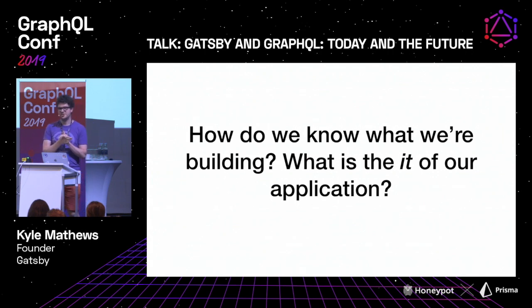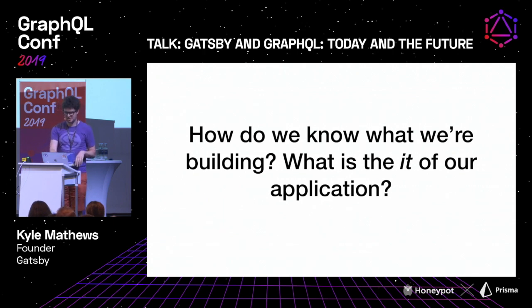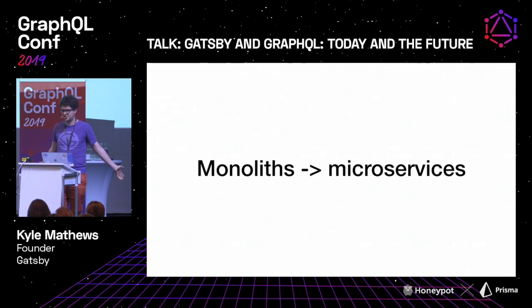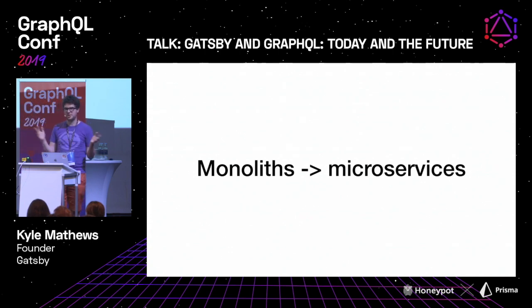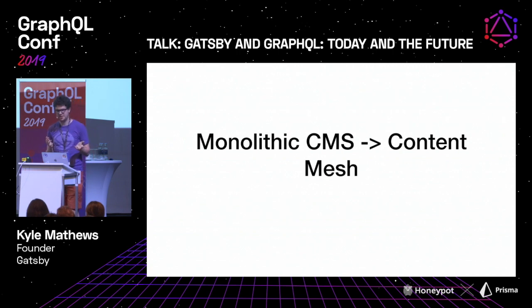Jumping back to 30,000 feet — something interesting is the changing nature of what we're building. Back in the day, life was simple because you had a single monolithic thing. You knew you were building a Rails app or a Node.js app. But in a world of microservices and Lambda functions, if you're at a large company you might be consuming 20 different back-end services maintained by people you've never met — data just shows up from somewhere. It's very hard to conceptualize what is the thing that you're building. Gatsby faces a similar problem: we're moving from monolithic CMSs to what we call the content mesh, where a website's data and functionality comes from a bunch of different services.